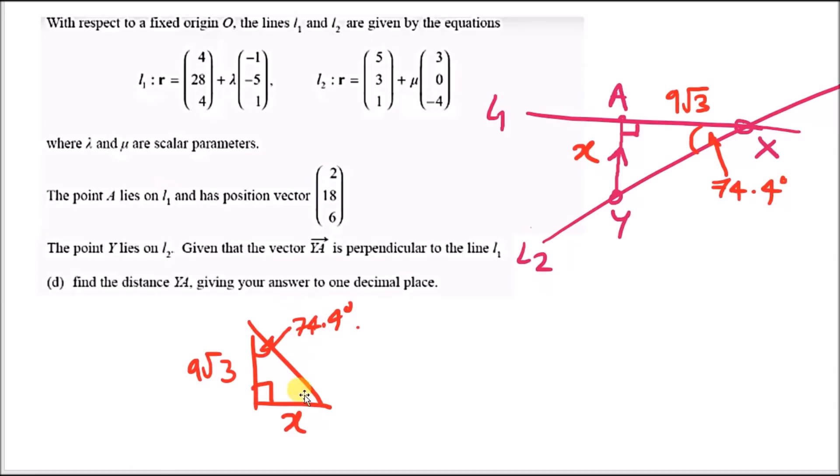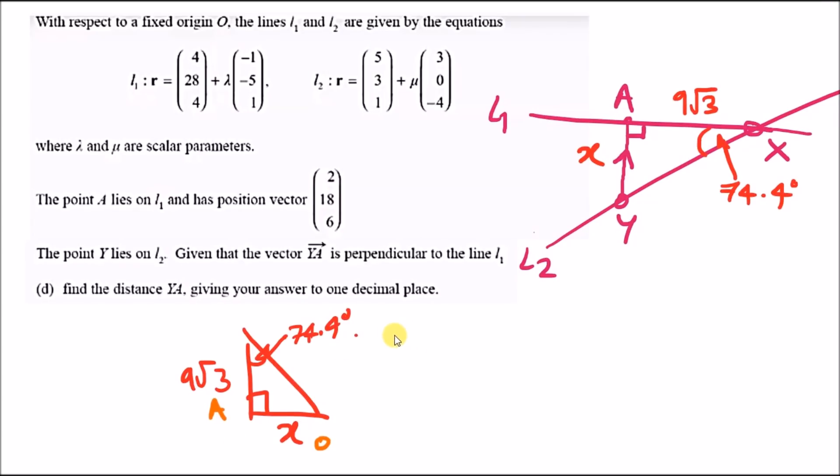We label the sides: this is the opposite side O, and this is the adjacent side A. Now we use the relationship SOHCAHTOA. For those who don't know, SOHCAHTOA is the trig relationship between sine, cos, and tan, where O is opposite, A is adjacent, and H is the hypotenuse. We look at the triangle and ask what's involved. We can see O and A are involved, so we use TOA.